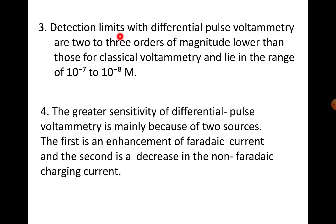Detection limits with DPV, differential pulse voltammetry, are two to three orders of magnitude lower than those for classical voltammetry and lie in the range of 10 to the power minus 7 to 10 to the power minus 8 molar.